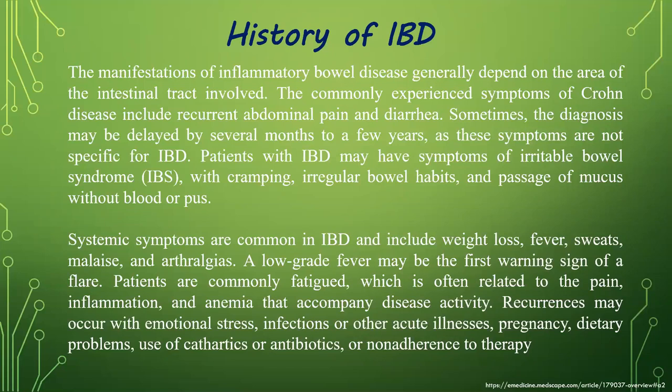The commonly experienced symptoms of Crohn's disease include recurrent abdominal pain and diarrhea; sometimes the diagnosis may be delayed by several months to a few years. Patients with IBD may have symptoms of irritable bowel syndrome, with cramping, irregular bowel habits, and passage of mucus without blood or pus. Systemic symptoms are common and include weight loss, fever, sweats, malaise, and osteoporosis. A low-grade fever may be the first sign of a flare. Patients are commonly fatigued, often related to pain, inflammation, and anemia accompanying disease activity. Recurrences may be triggered by emotional stress, infections, acute illness, pregnancy, dietary problems, use of cathartics or antibiotics, or non-adherence to therapy.